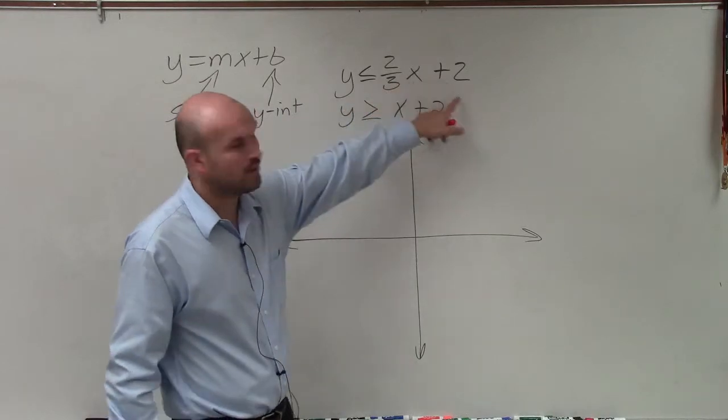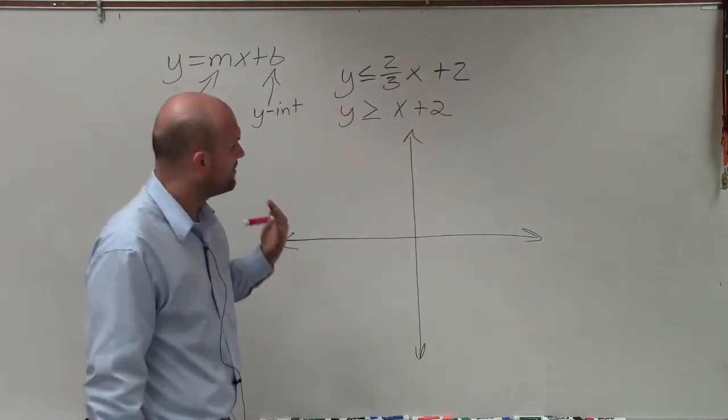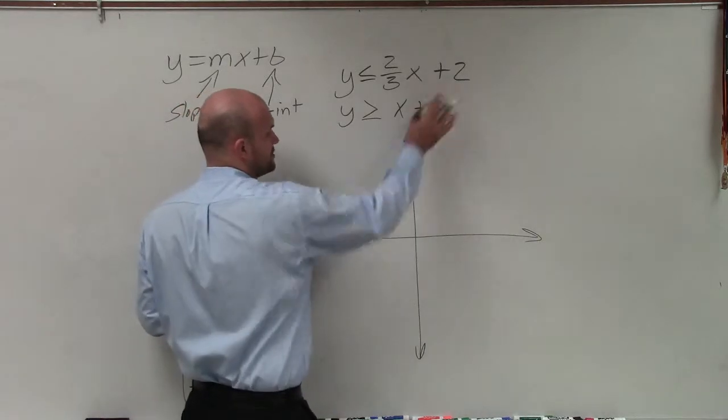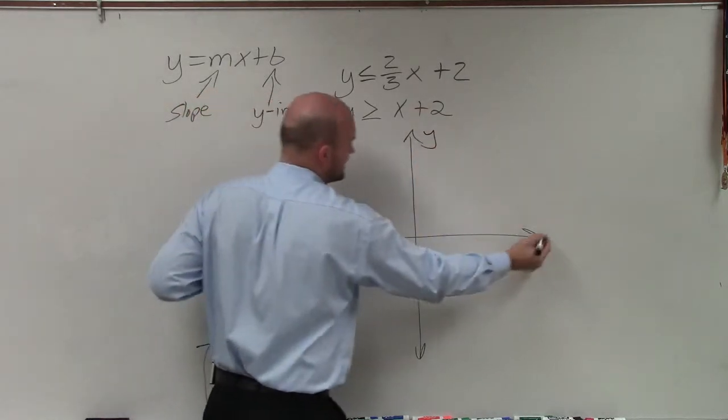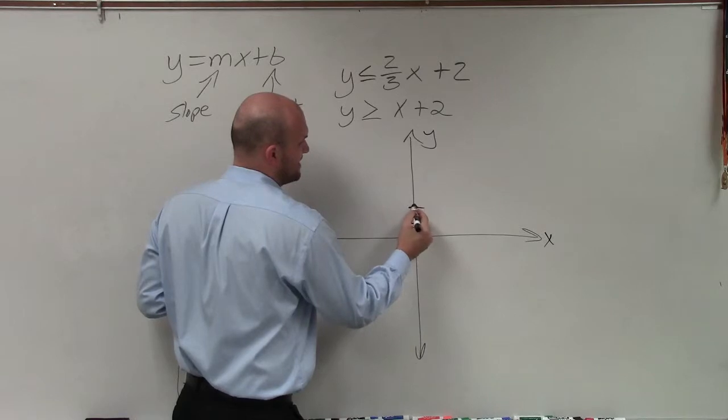So the slope is 2/3, the y-intercept is 2. So to graph this inequality, the first thing I'm going to do is plot the y-intercept, which is at positive 2. So I go up my y-axis, up 2, 1, 2, and I make a nice big dot.